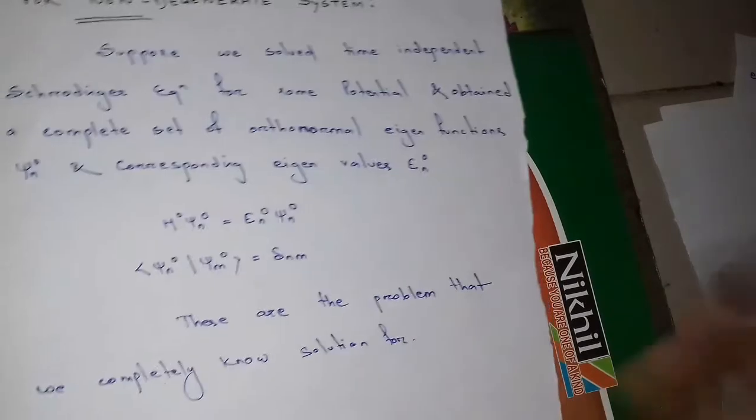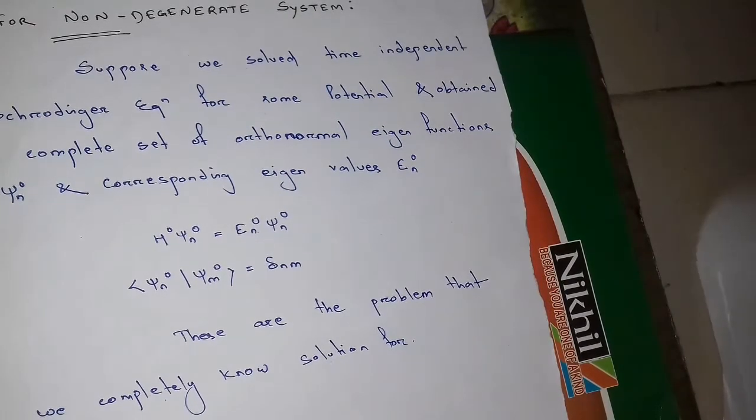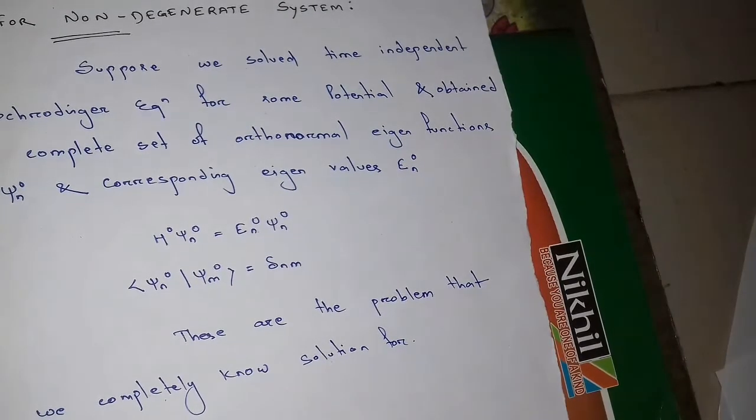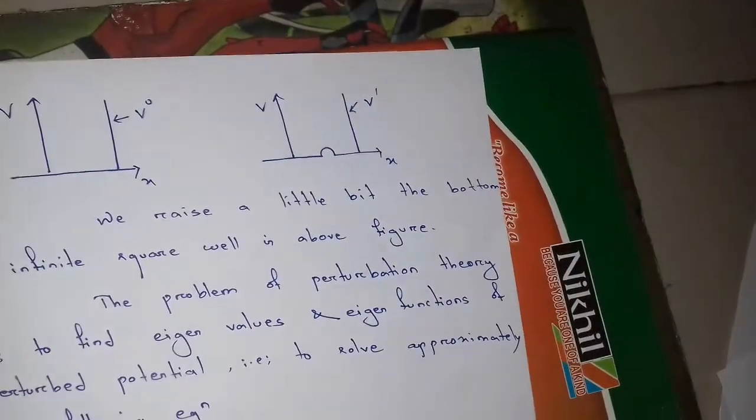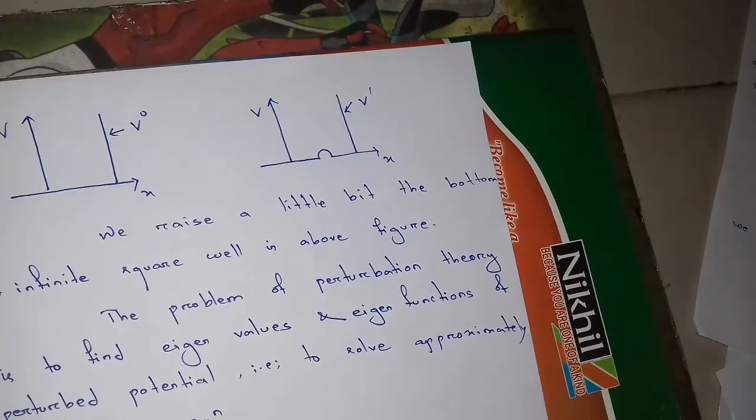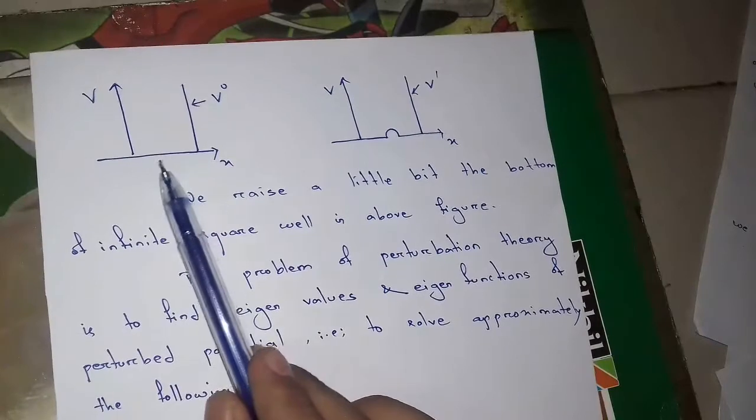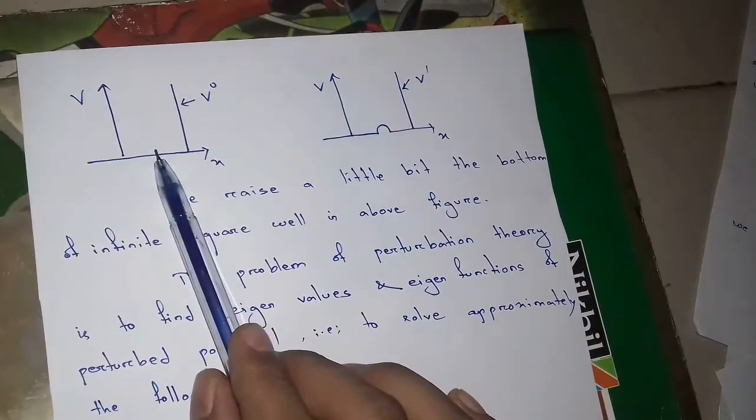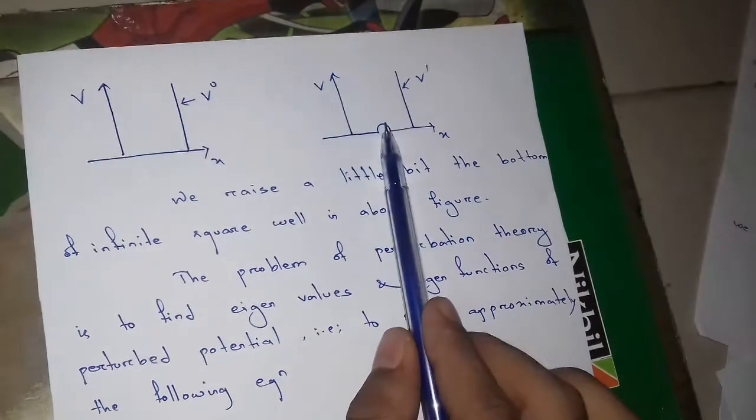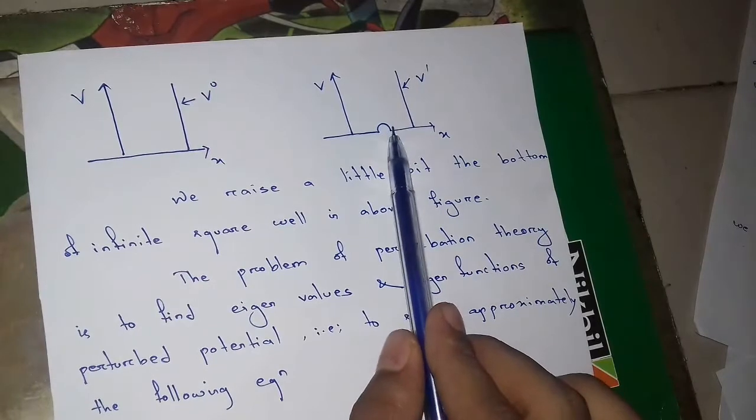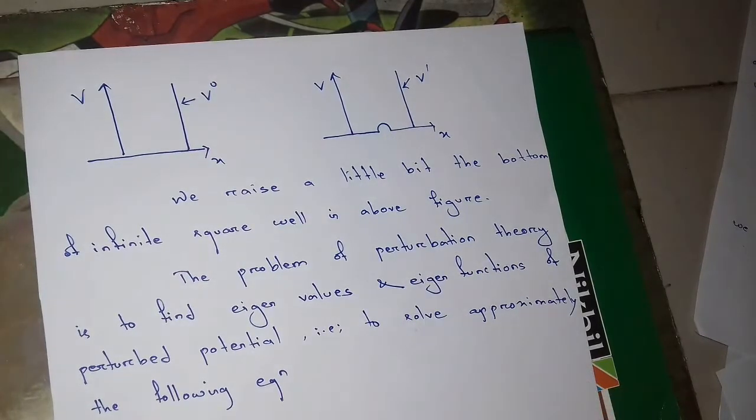Now, what we will have to do is, we will have to consider two infinite square well, for example this one, one infinite square well potential and this one is another. In this case, we raise a little bit the bottom of infinite square well in above figure.